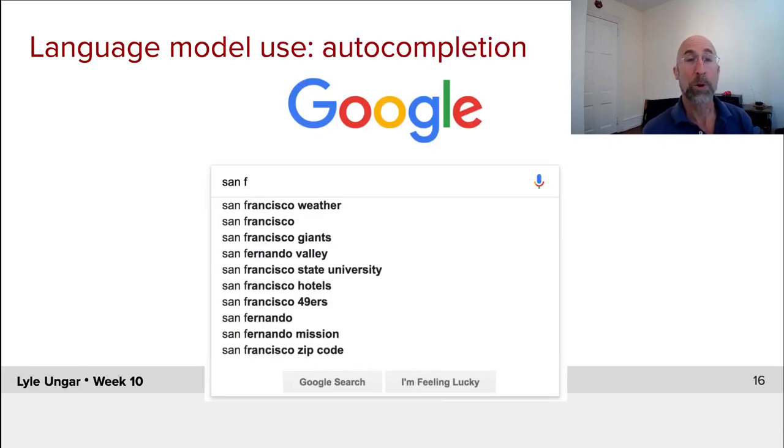You can also do language models over characters. If you go to Google and type in S-A-N space F, it will have a language model which will say what are the most probabilistic completions. And given where Google is, it's San Francisco, by the way. What the automatic completion is here actually depends upon where you're typing it. Very clever. They use other information in the neural net. But note the language model is predicting what characters or what words will come next.